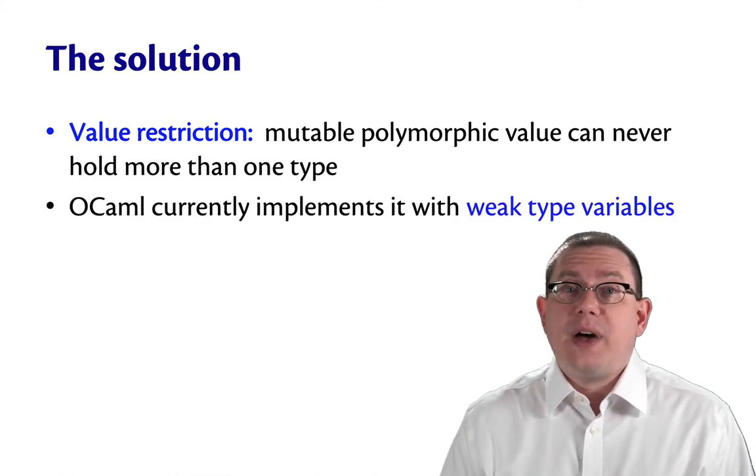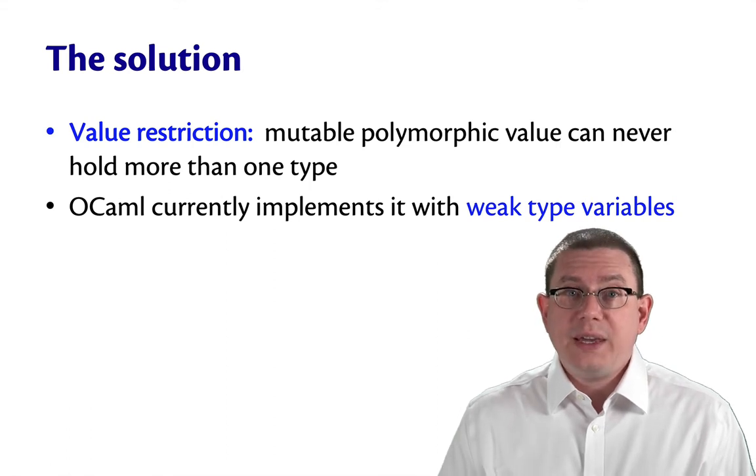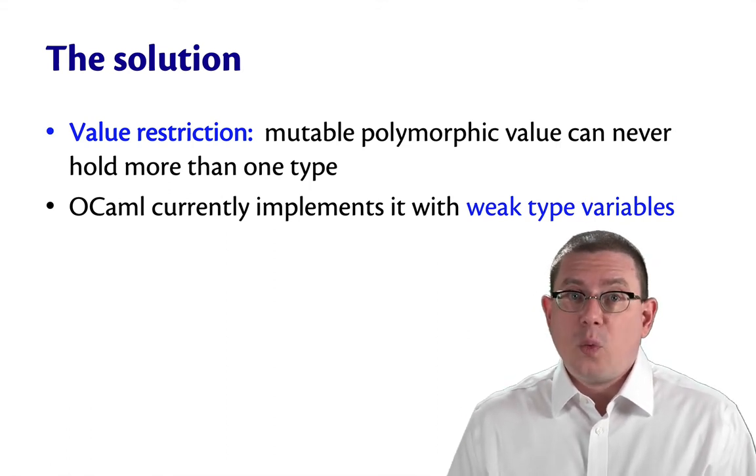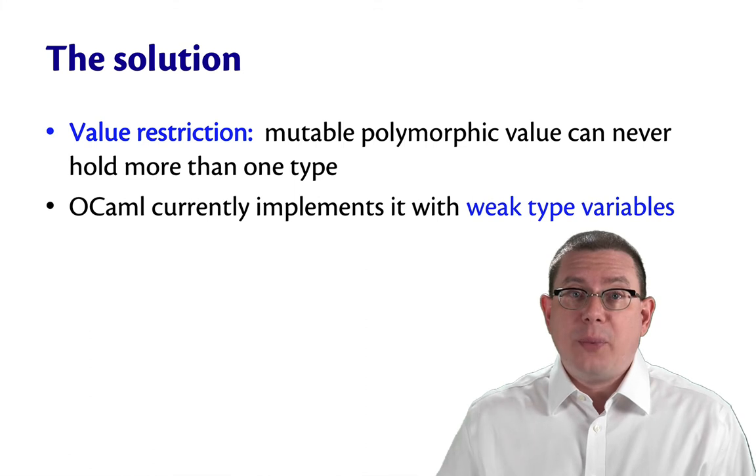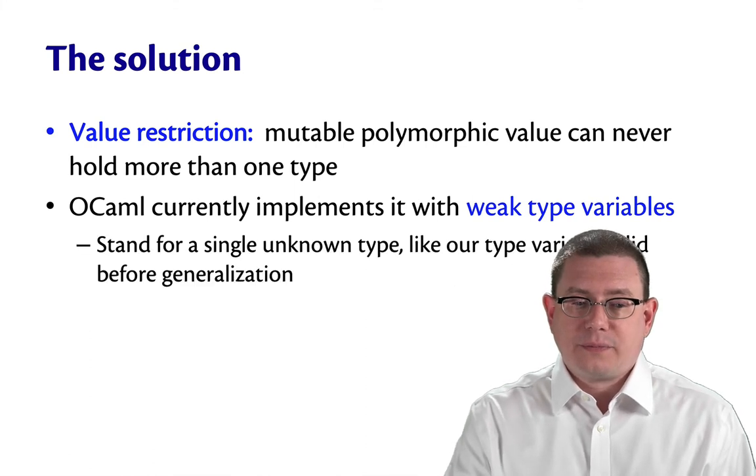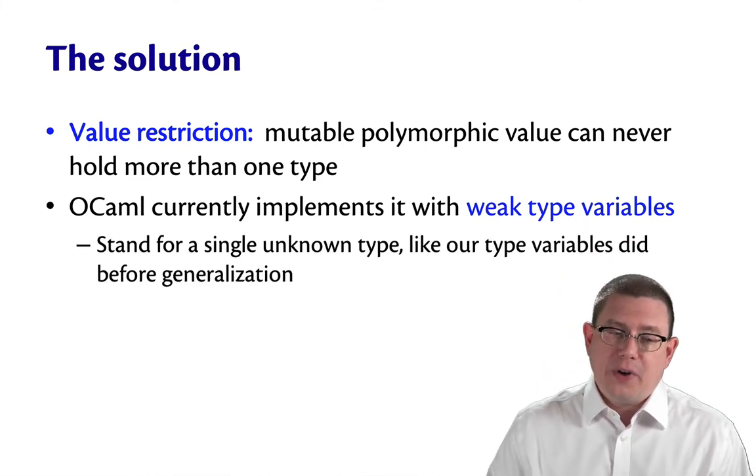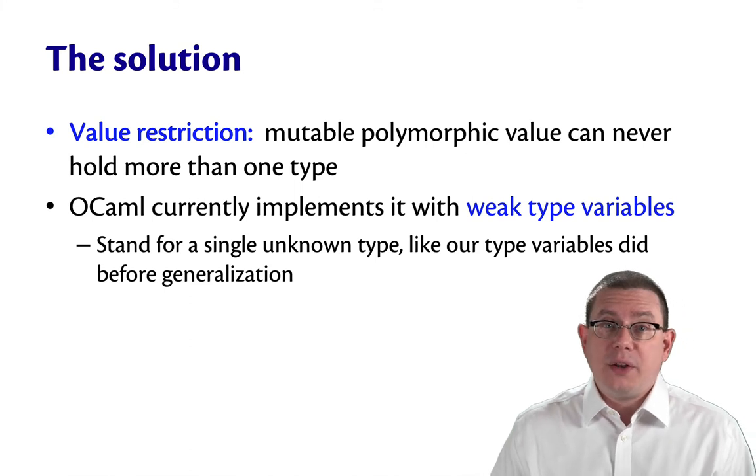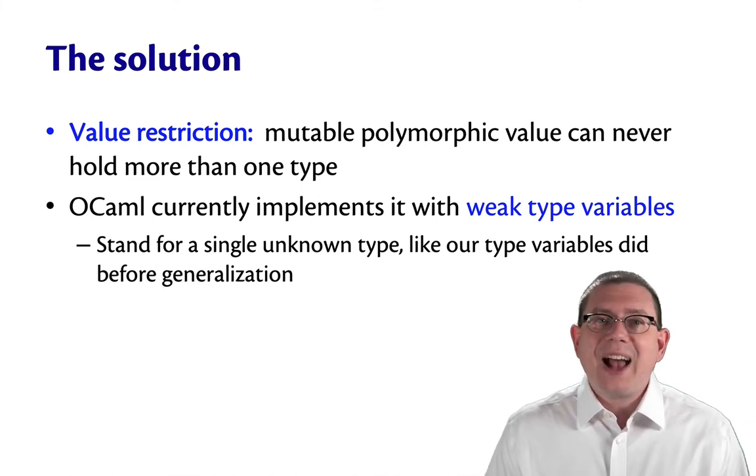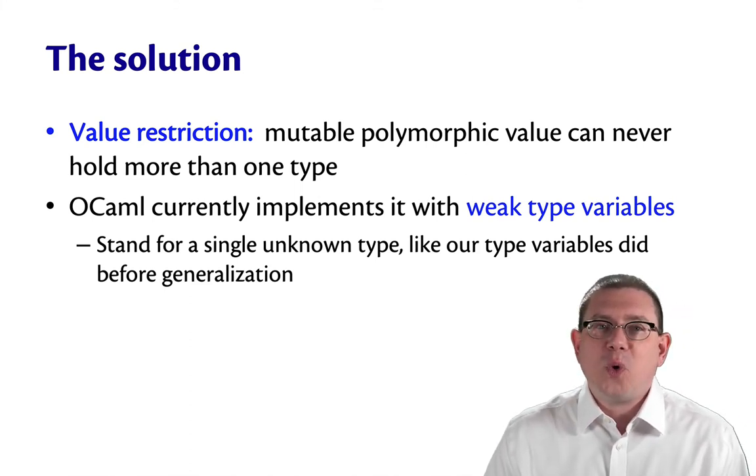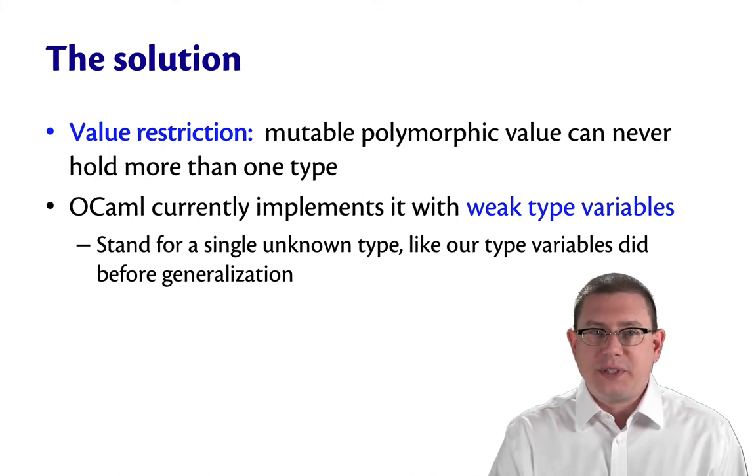OCaml currently implements the value restriction with weak type variables, which are what we've seen showing up a couple times now already. A weak type variable stands for a single unknown type, which is exactly what our type variables did before we introduced generalization for polymorphism.